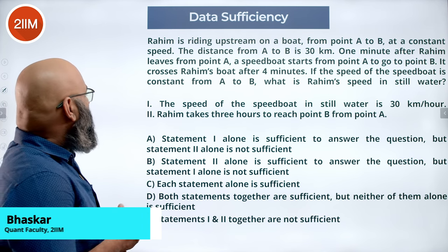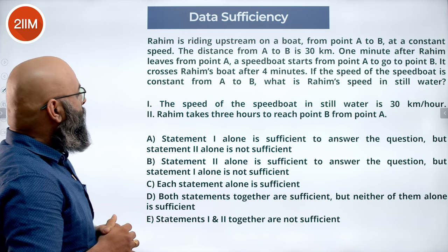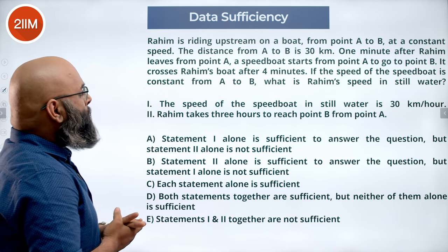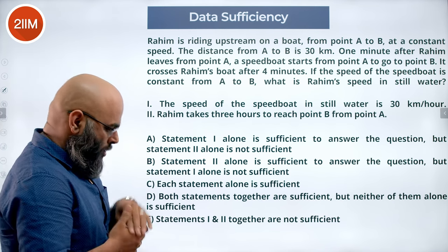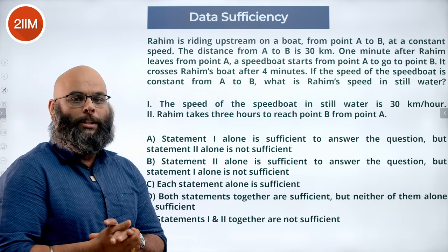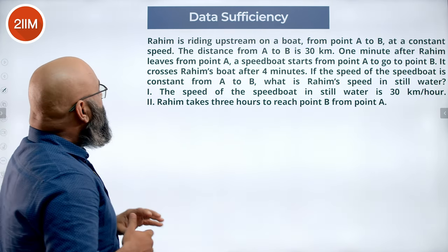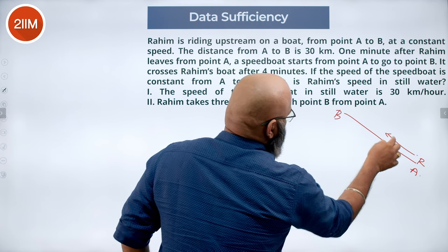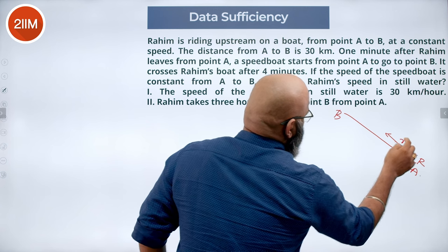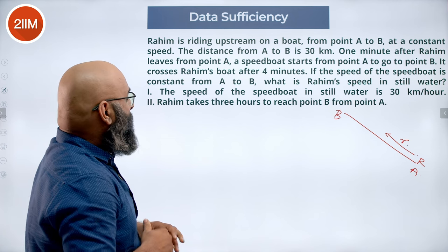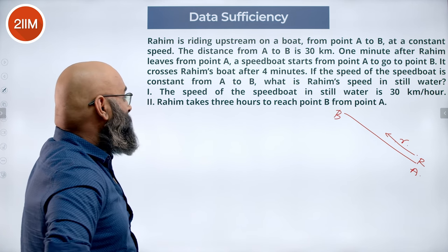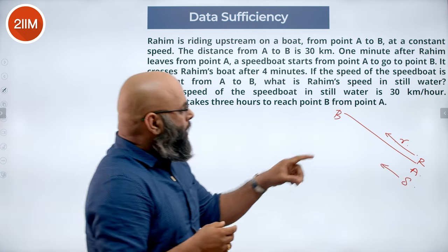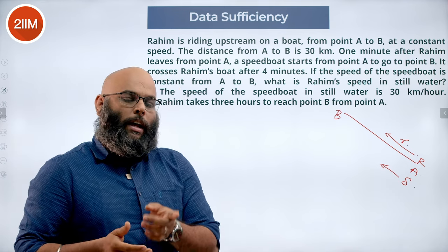Raheem is riding upstream on a boat from point A to B at a constant speed. The distance from A to B is 30 km. One minute after Raheem leaves point A, a speedboat starts from A to go to B and crosses Raheem's boat after 4 minutes. If the speed of the speedboat is constant, what is Raheem's speed in still water? Raheem travels upstream at speed R−S, and the speedboat at SB−S. Raheem travels for 5 minutes while the speedboat travels 4 minutes to cover the same distance. Since time is inversely proportional to speed, the speed ratio (R−S)/(SB−S) = 4/5.